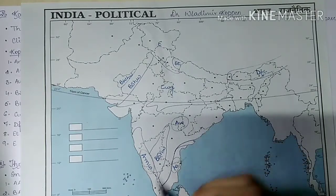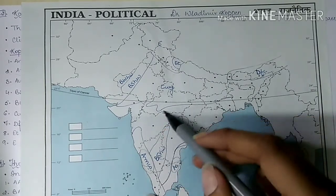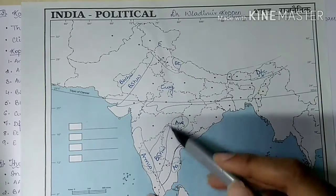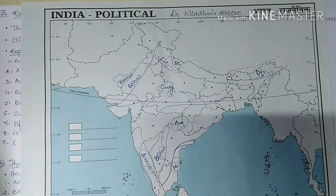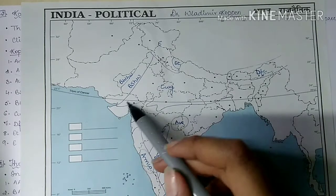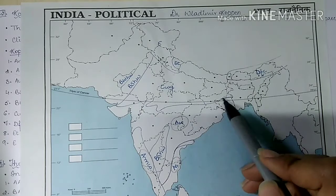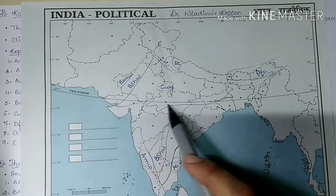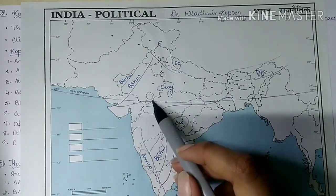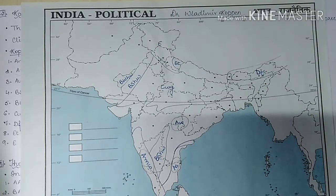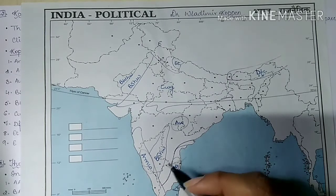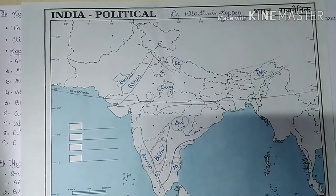AW — tropical savannah type — is found in most of the peninsular region, except for the AMW and AS areas. If we closely look at the northern boundaries of this climatic region, the average rainfall is about 75 centimeters, received in summer from the southwest monsoon, with mainly dry winters.